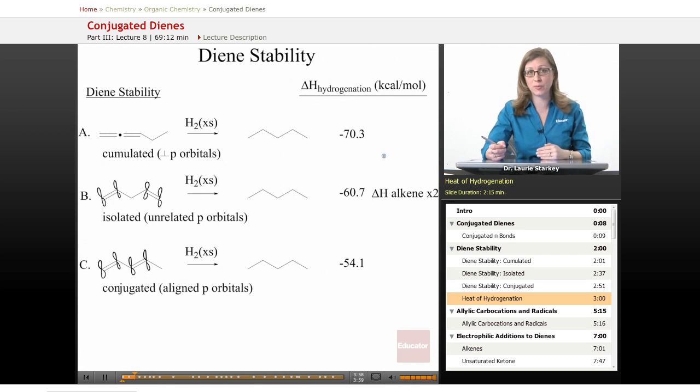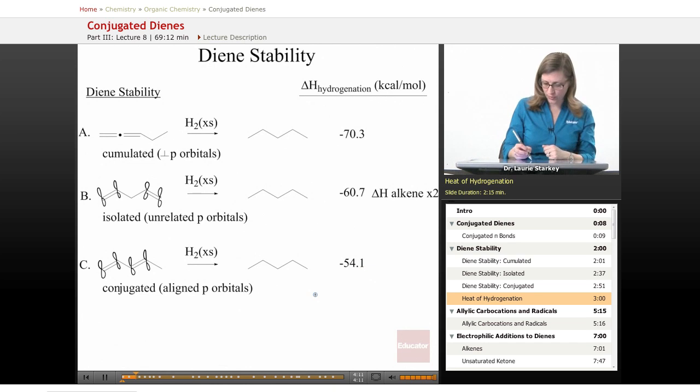And when you allow them to be conjugated with one another, you have a lot less energy being released, which means your diene must have started out at lower energy. So if we do a quick energy diagram comparing these three, they're all going to the same product, pentane. But A must be starting at a higher energy than B, and C must be starting at a lower energy than B.